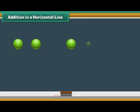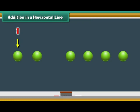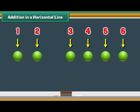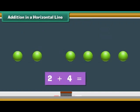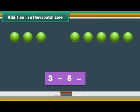Addition in a horizontal line: let us now use dots to add numbers horizontally. Look at the screen. There are two dots on the left and four dots on the right. What is two plus four? Count the total number of dots: one, two, three, four, five, six. Therefore, two plus four is six. What is three plus five? Count the dots.